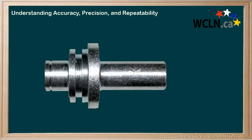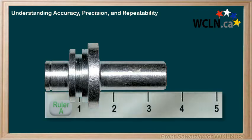So we've considered accuracy and precision. With precision, we considered how small the increments are on our measuring device — a ruler in this case. But there's another impact from how small those increments are as well. It has to do with the repeatability when using that device.